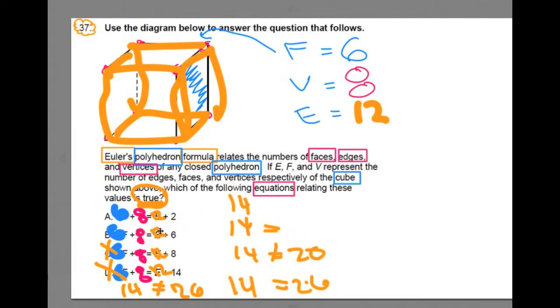B, we have twelve plus six, that gets you eighteen. That doesn't get us to the answer. But this one does. Six plus eight gets fourteen, twelve plus two gets fourteen. So A is a true statement. So A is the answer.